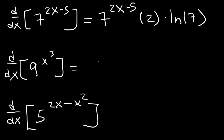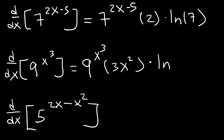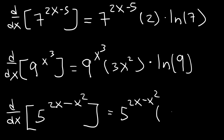In the next problem, a is 9 and u is x cubed. So it's a to the u times u prime — the derivative of x cubed is 3x squared — and then times ln 9. For the last one, it's going to be a to the u times the derivative of 2x minus x squared, which is 2 minus 2x, times the natural log of 5.